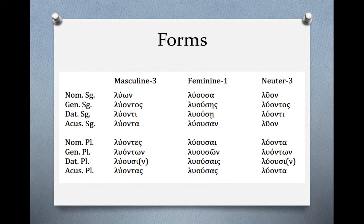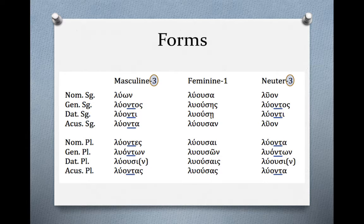The masculine and neuter participles follow the third declension. If you remember from a few lessons ago, third declension noun stems end in a consonant rather than a vowel, and that affects the endings they take. The reason these participles are third declension is because of the participle morpheme, which is nu-tau. The nu-tau in the word tells us it is functioning as a participle, similar to how the tense formative in verbs tells us the tense. Because the morpheme ends in tau, the stem ends in tau and follows third declension formation patterns.